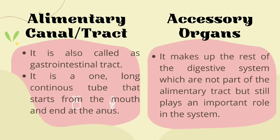The digestive system is divided into two: the alimentary canal or alimentary tract, and the accessory organs. The alimentary canal is also called the gastrointestinal tract. It is one long continuous tube that starts from the mouth and ends at the anus — just like a canal, it is straight and continuous, with only one path.